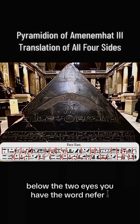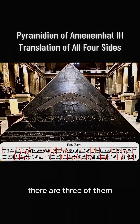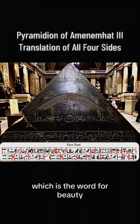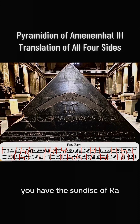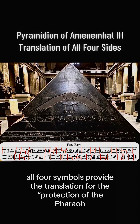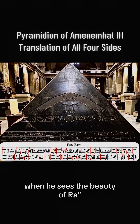Below the two eyes, you have the word Nefer. There are three of them, which makes it plural — therefore Neferu — which is the word for beauty. And below the symbols of beauty, you have the Sun Disc of Ra. All four symbols provide the translation for the protection of the Pharaoh when he sees the beauty of Ra.